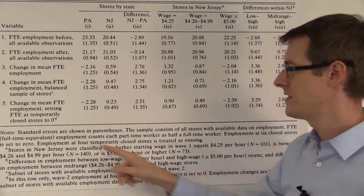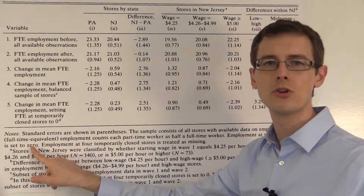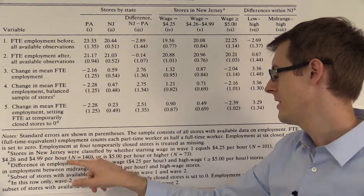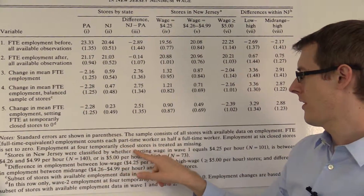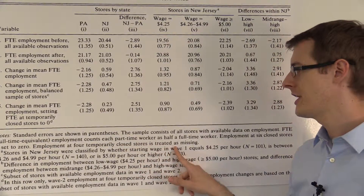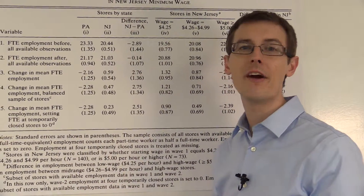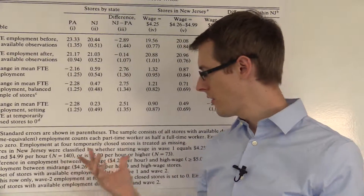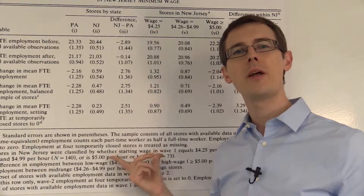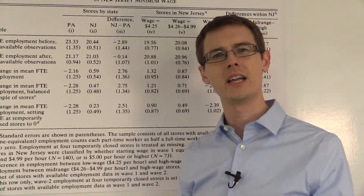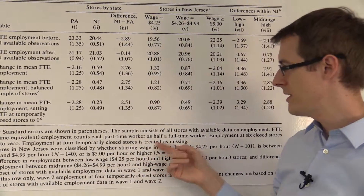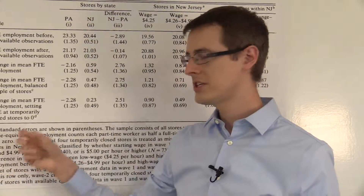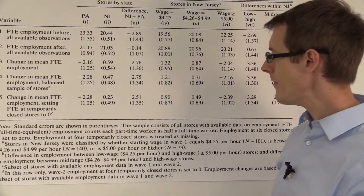Employment at six closed stores is set to zero. So some stores were closed in some time periods and they just set employment to zero. Employment at four temporarily closed stores is treated as missing, which means we don't even include them in our averages. Data's not perfect, so they explain what they're doing when they don't see data for some stores.